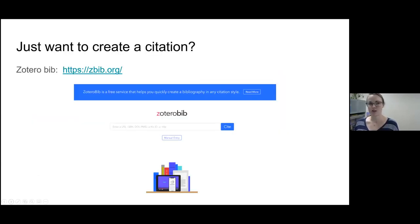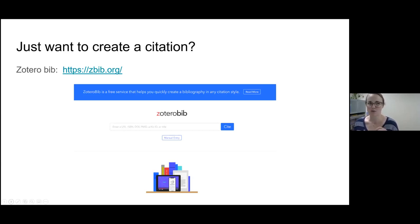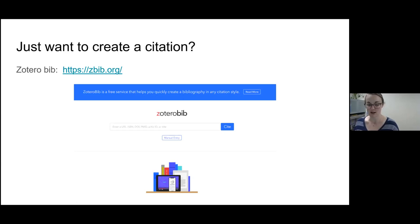If you're just creating a citation and don't necessarily want to save it to Zotero, or you don't want to make an account, you can use Zotero Bib. Put the URL into the search box and click Cite, then choose from just about every citation style you can imagine. It's a great way to quickly make a citation.